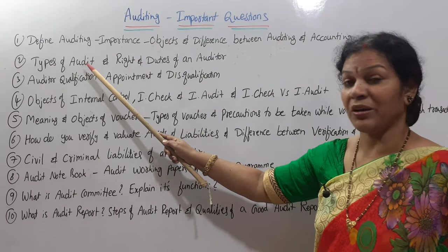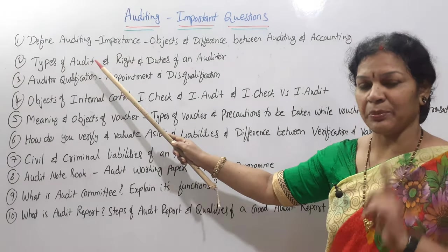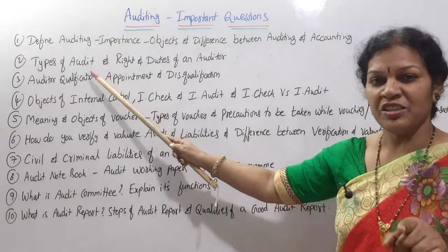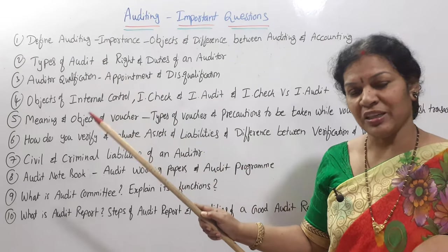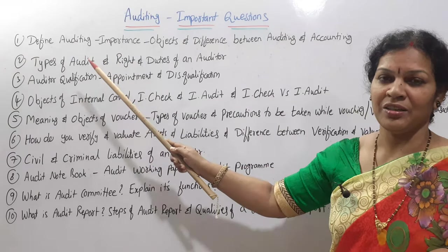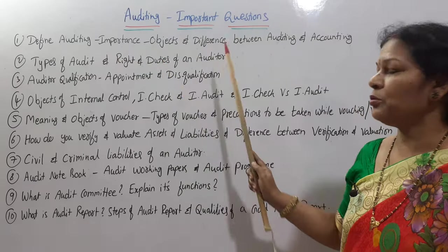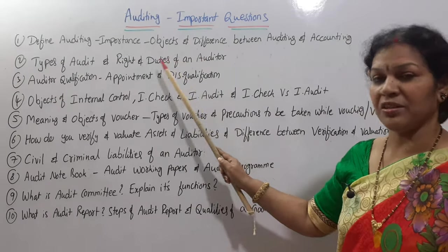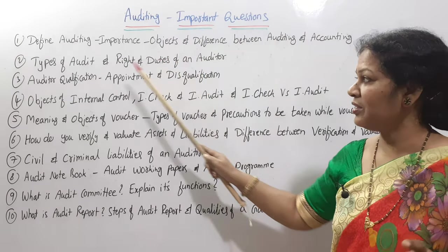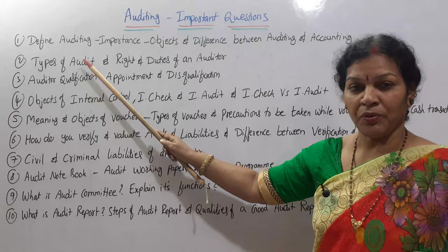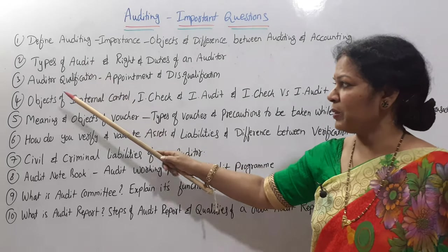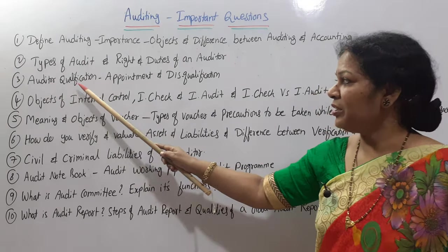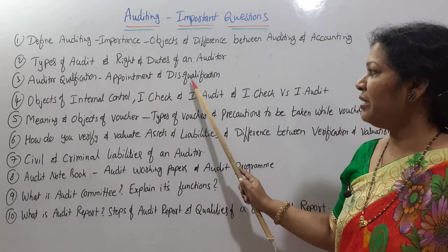Second question: types of audit. There are different types of audit, which you may expect as a short answer or essay. Third question: rights and duties of an auditor — this one is also always expected, either as a short answer or essay.